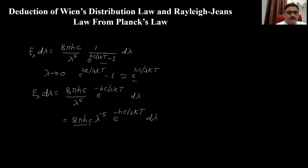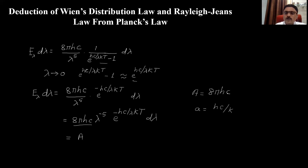Looking at this equation, 8πhc is a constant which we can write as capital A. Similarly, hc/k contains only constants — Planck's constant, velocity of light, and Boltzmann's constant — so we can define another constant, small a, equal to hc/k. Using these constants, the energy density equation becomes: E_λ dλ = A × λ^(−5) × e^(−a/λkT) × dλ.